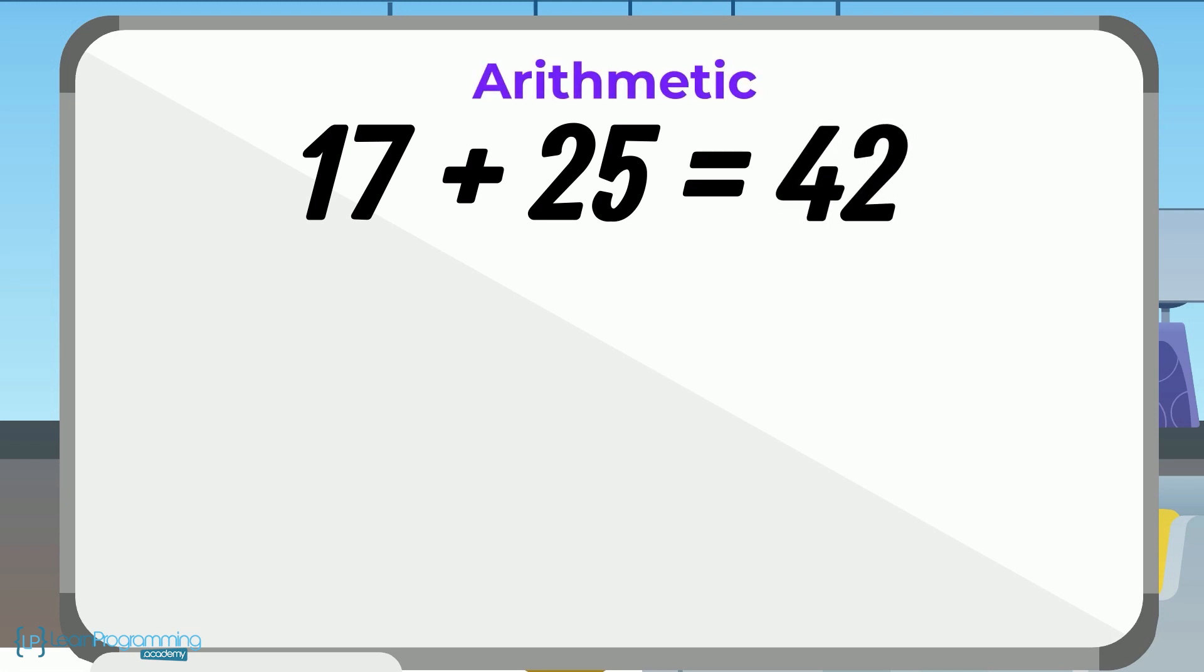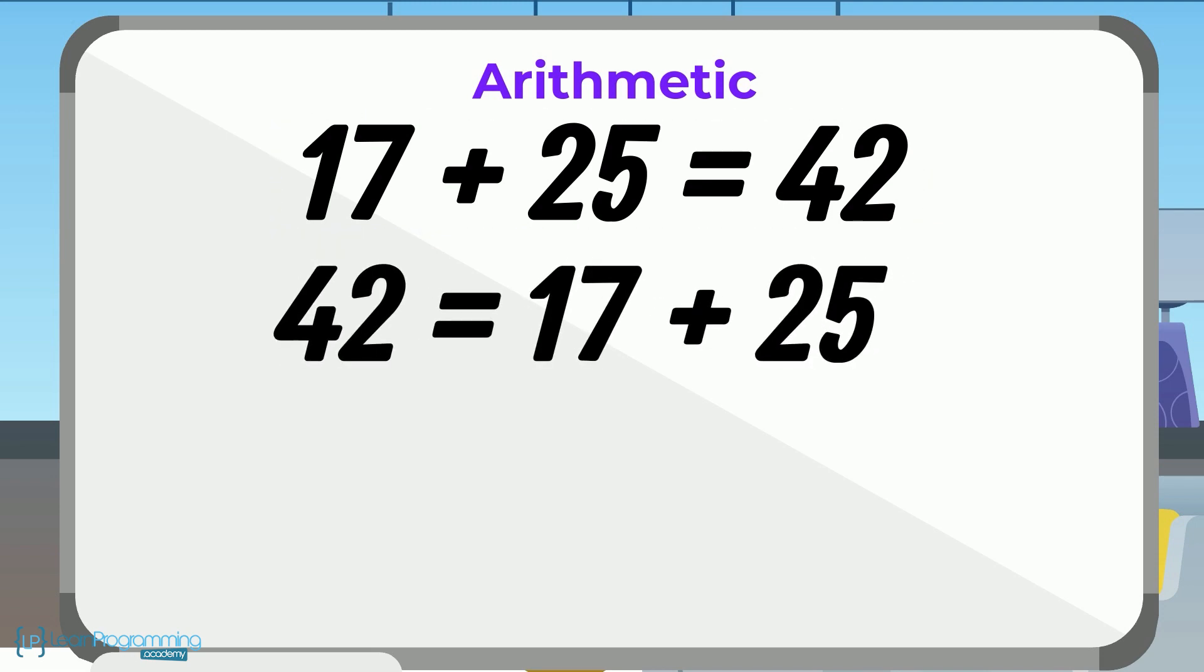In arithmetic, it would look something like this: 17 plus 25 equals 42, or we could say 42 equals 17 plus 25.